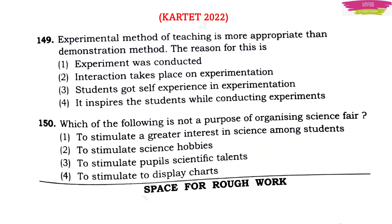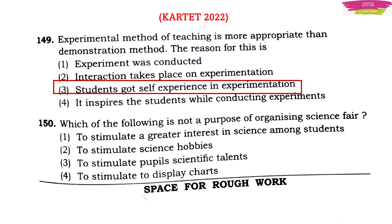Next question: the experimental method of teaching is more appropriate than the demonstration method — the reason for this is: (a) experiments were conducted; (b) interaction takes place during experimentation; (c) students get self-experience in experimentation; (d) it inspires students while conducting experiments. The correct answer is that students get self-experience in experimentation.